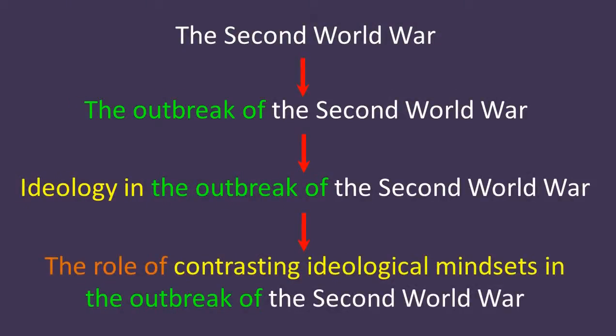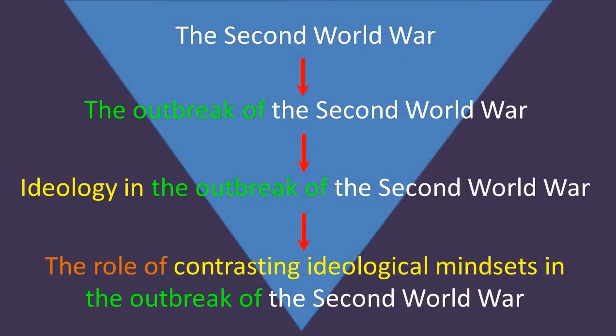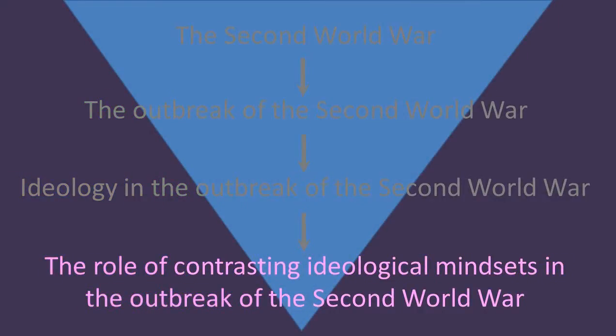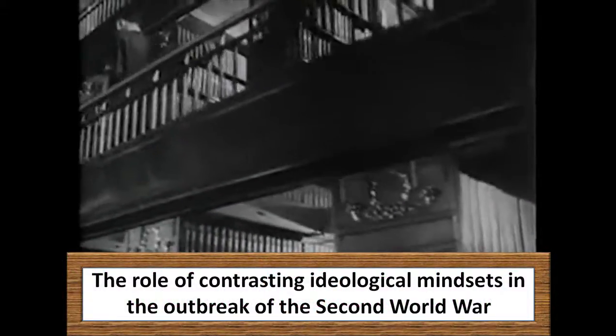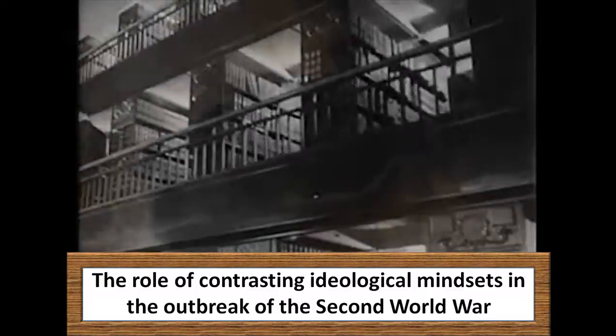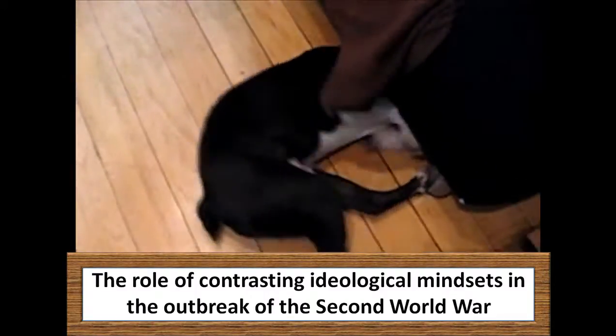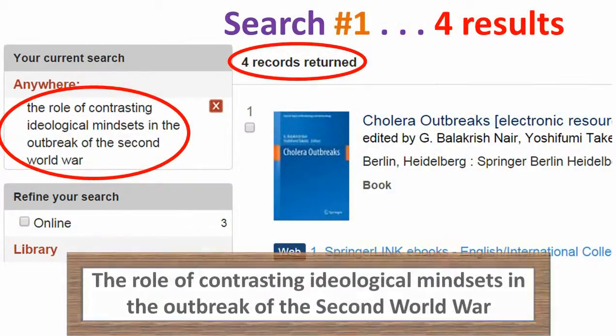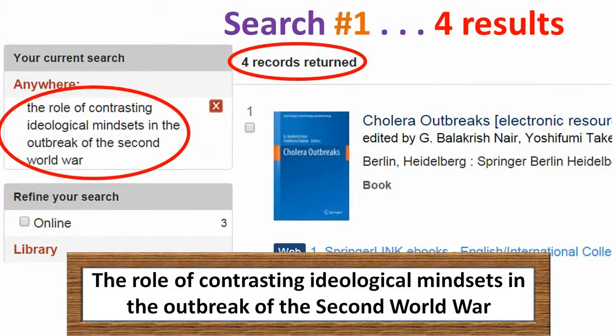Take World War II as an example. You whittle down and focus your essay topic, and now you've got to find books and articles on that topic. The problem is, well-focused topics are unwieldy when searching — they're too big. The more words a database has to juggle, the fewer results it finds. Here's what happens when you force that topic into the U of T library's catalog search box: only four results, and they aren't even on your topic.